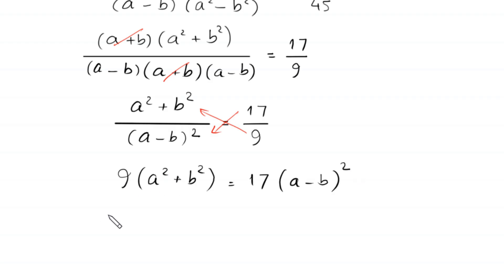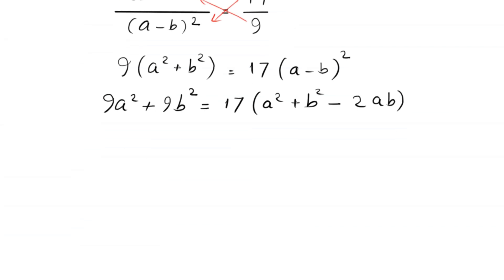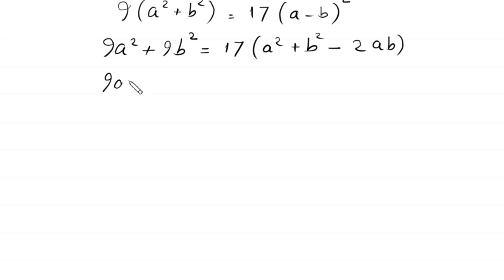Expanding the left side gives 9a² + 9b². We expand (a - b)² as a² + b² - 2ab, so the right side becomes 17a² + 17b² - 34ab.